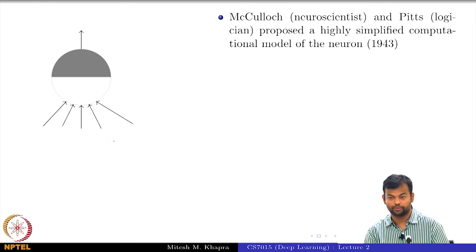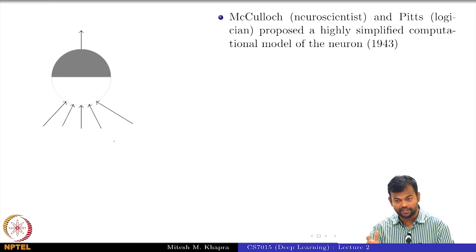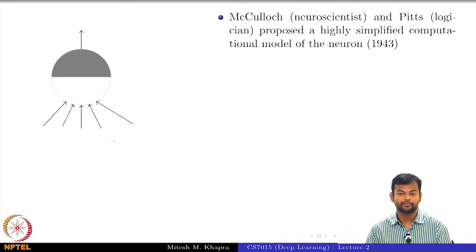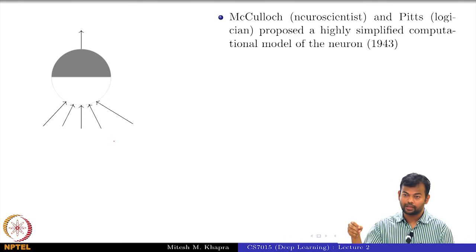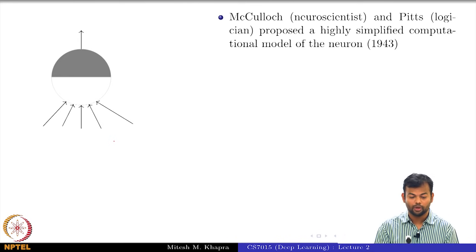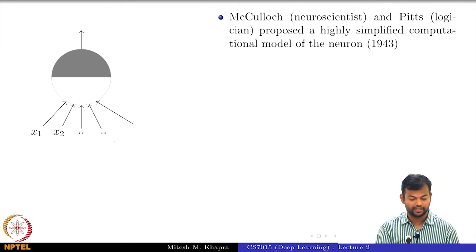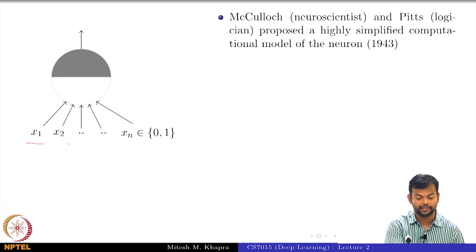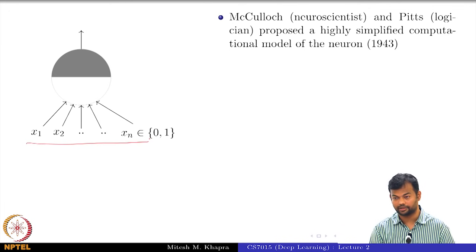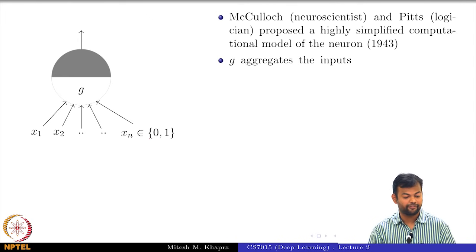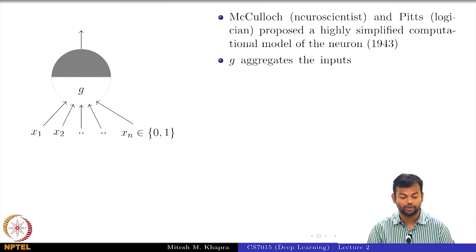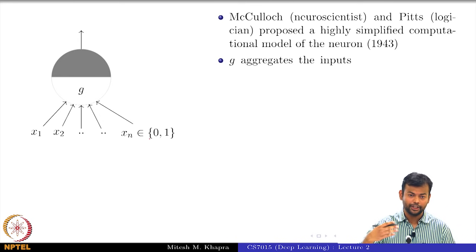Now, what if we want a computer to do this? We want a model which is very similar to how the brain works — or at least how we think the brain works — which takes a lot of inputs, does some processing, and helps us take a decision. What they proposed is a model which will take a lot of inputs, and these inputs are all binary. These inputs are fed to the McCulloch-Pitts neuron, which is an artificial neuron, and it is divided into two parts.